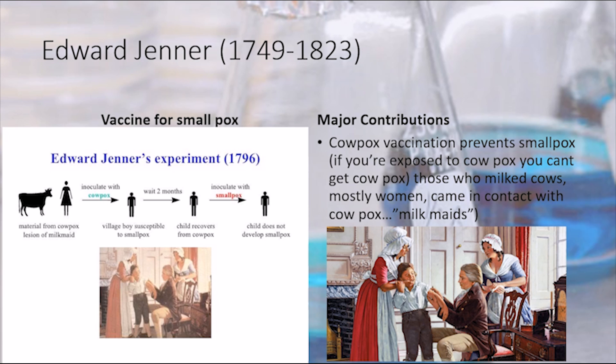He submitted a paper to the Royal Society in 1797 describing his experiment, but was told that his ideas were too revolutionary and that he needed more proof. Undaunted, Jenner experimented on several other children, including his own 11-month-old son. In 1798 the results were finally published, and Jenner coined the word vaccine from the Latin vaca for cow.